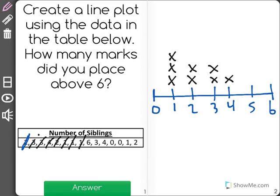So those 3 ones in a row, I now have 3 X's on top of the 1. 6, 3, 4, 0, another 0, 1, and a 2.